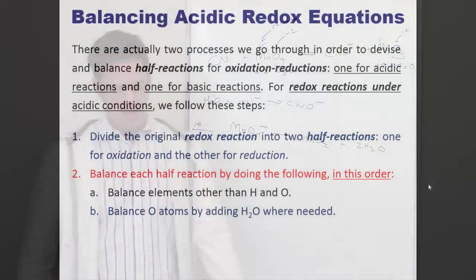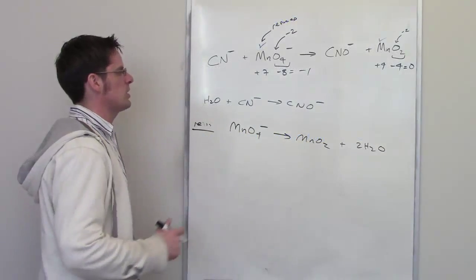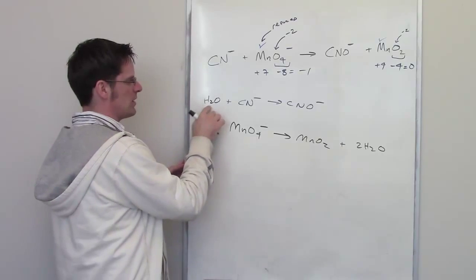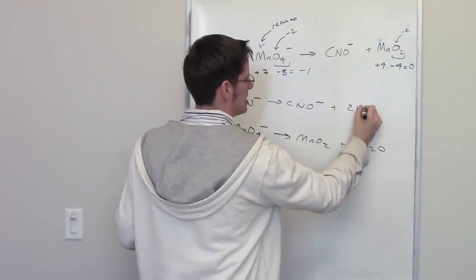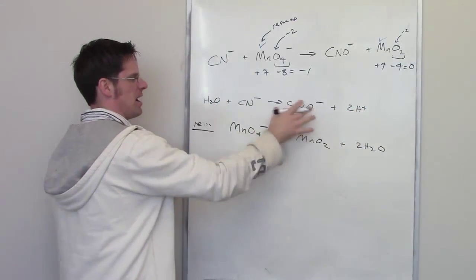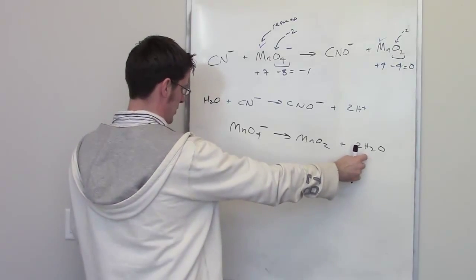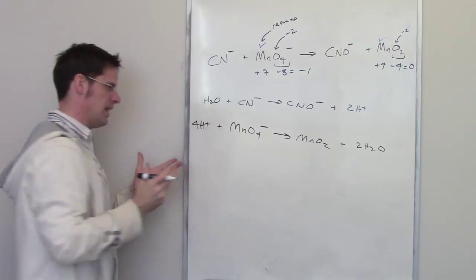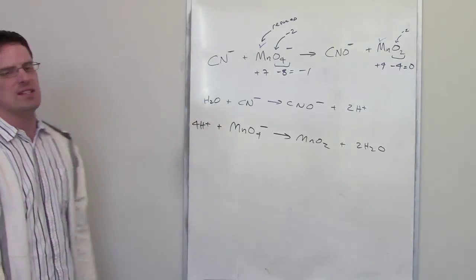The next step says balance hydrogen atoms by adding H⁺ as needed. Because I just added H₂O, I've now added hydrogens. In the oxidation half-reaction, I've got two hydrogens on the left, so I add two H⁺ to the right. In the reduction half-reaction, I've got four additional hydrogen atoms on the right from the added water, so I add four H⁺ to the left. Now hydrogen atoms are balanced in both half-reactions.